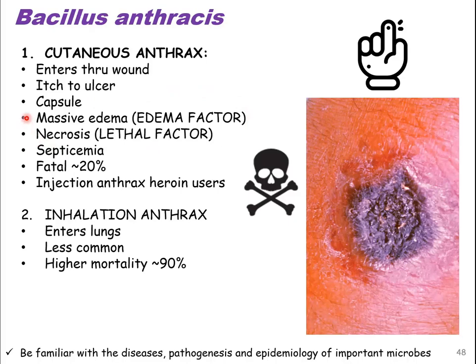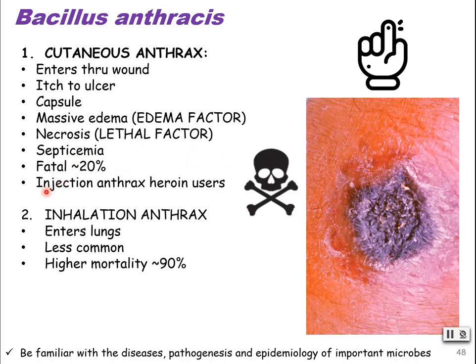They have two very deadly toxins. One is called edema factor — so you get swelling — and the other one is called the lethal factor. These are cytotoxins, so they are going to damage cells. They are also coded for on a plasmid, part of that mobile gene pool. They can go into the bloodstream, so you get septicemia. Cutaneous anthrax is the more common version, less virulent, and fatal in about 20% of cases. It is also common in heroin users, through a break in the skin.